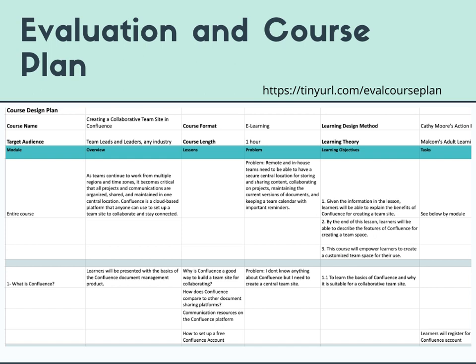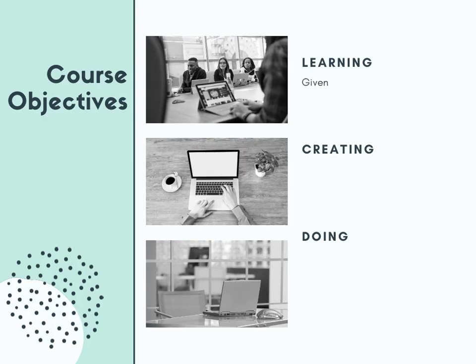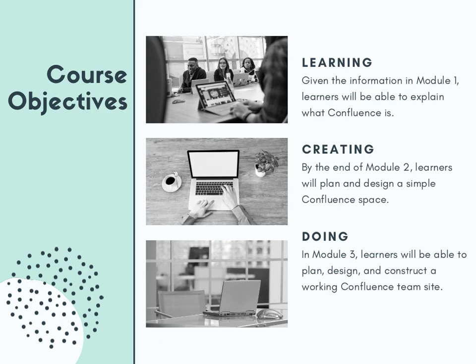This is just an example of the first module for my course with the learning objectives and activities aligned. If you would like to see the full plan, there is a tiny URL link at the top, and you can copy and paste that into your browser. Here you will see the main three course objectives for each module. The goal was that I wanted students to be able to learn, create, and do in order to solve their problems. Since my course was developed under Cathy Moore's Action Mapping Model, these are important components of a problem-based course.